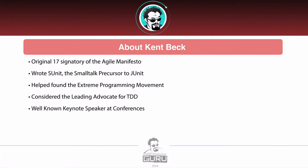Kent Beck is very well known. He was one of the original 17 people that signed the Agile Manifesto. He was originally known as the founder of SUnit back in the Smalltalk days — Smalltalk was the big OO language prior to Java. SUnit was the precursor to JUnit, and Kent Beck is one of the people that founded JUnit, which we'll be looking at a lot in this course.